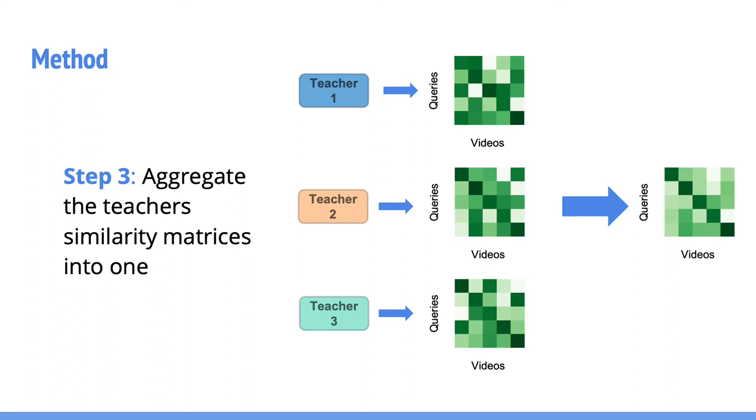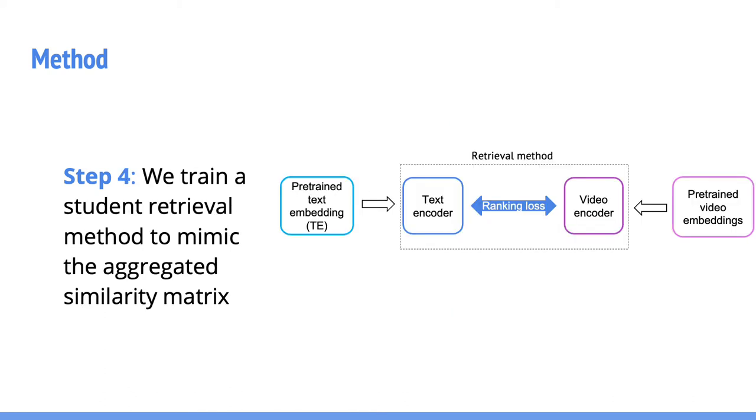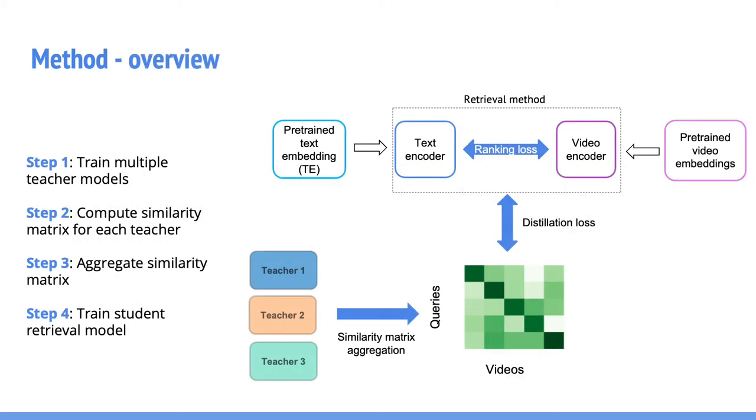Next, we aggregate all the teacher similarity matrices. In our final experiments, we use a simple but effective mean aggregation. Now, it is time to train the student model. In addition to the retrieval loss, the student learns to mimic the aggregated teacher similarity matrix using a distillation loss. In this way, we introduce a novel algorithm that combines multiple text embeddings for the text video retrieval task. By making use of generalized distillation, there is no additional computation cost during inference.